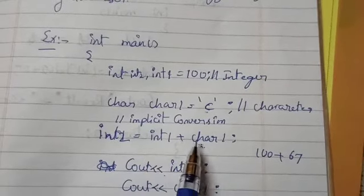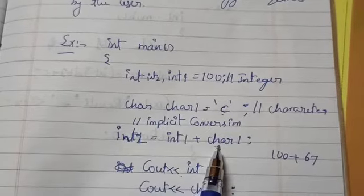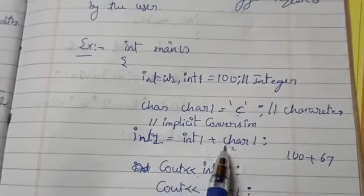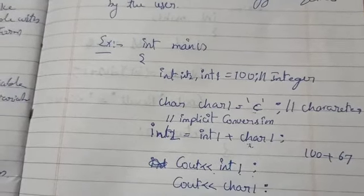If you want to add the two numbers, int1 is the integer 100, you have a value, character 1, char1 has the capital C. System automatically, the compiler automatically converts this character 1 to ASCII value.